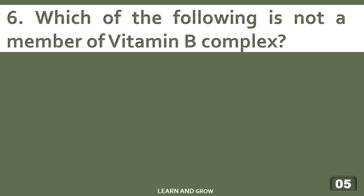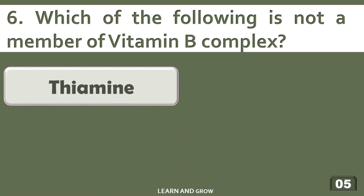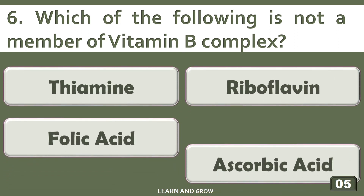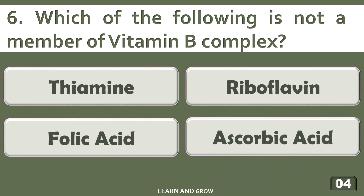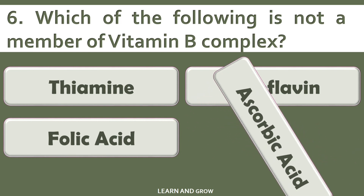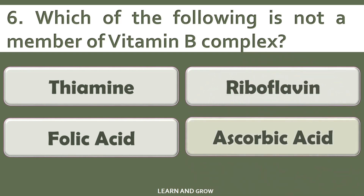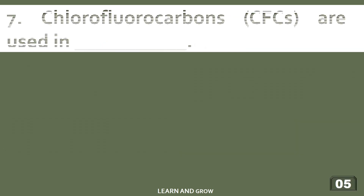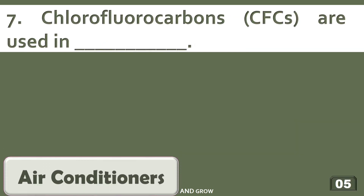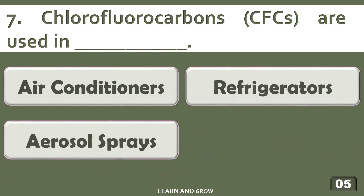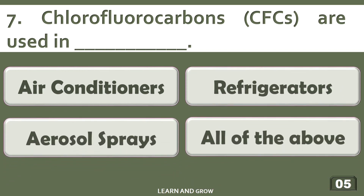Which of the following is not a member of the Vitamin B complex? Options are: A) Thiamine, B) Riboflavin, C) Folic acid, or D) Ascorbic acid. The right answer is ascorbic acid. Chlorofluorocarbons are used in — options are: A) air conditioners, B) refrigerators, C) aerosol sprays, or D) all of the above.